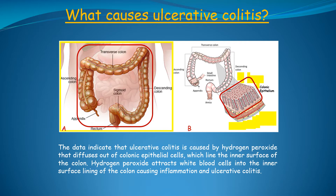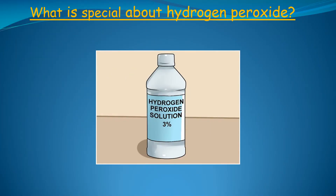Now that you have an idea of where the hydrogen peroxide is coming from, we can examine what is so special about hydrogen peroxide that it can cause ulcerative colitis. Hydrogen peroxide is produced in every cell in the body, including colonic epithelial cells. But of all the thousands of different molecules in the human body, why would hydrogen peroxide cause ulcerative colitis? The answer is that hydrogen peroxide has several unique molecular characteristics and qualities that make it a prime candidate as an etiological agent for ulcerative colitis.